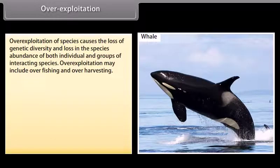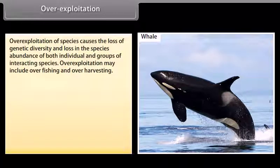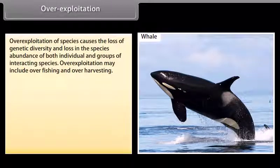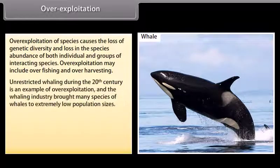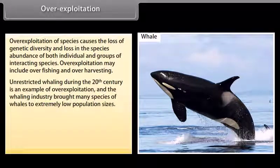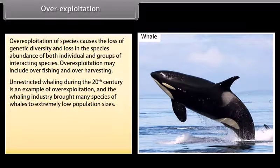Over-exploitation of species causes the loss of genetic diversity and loss in the species' abundance of both individuals and groups of interacting species. Over-exploitation may include over-fishing and over-harvesting. Unrestricted whaling during the 20th century is an example of over-exploitation, and the whaling industry brought many species of whales to extremely low population sizes.